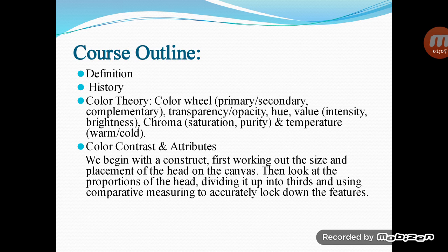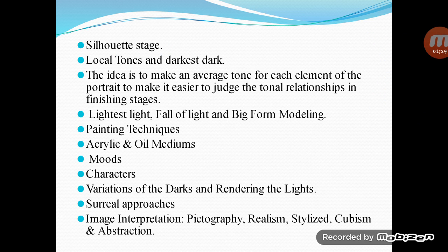Purity, Temperature, Warm and Cool Color, Contrast Attributes. We begin with a contrast, first working out the size and placement of the head on the canvas, then looking at the proportion of the head, dividing it up into thirds and using comparative measuring to accurately lock down the features. Silhouette Stage, Local Tones and Darkest Tones — the idea is to make an average tone for each element of the portrait to make it easier to judge the tonal relationship. Finishing Stages: Lightest Light, Fall of Light, and Big Form Modeling. Painting Techniques: Acrylic, Oil Mediums, Moods, Characters, Variation of the Darks and Rendering the Lights, Surreal Approaches, Image Interpretation, Pictography, Realism, Stylized, Cubism, Abstraction.